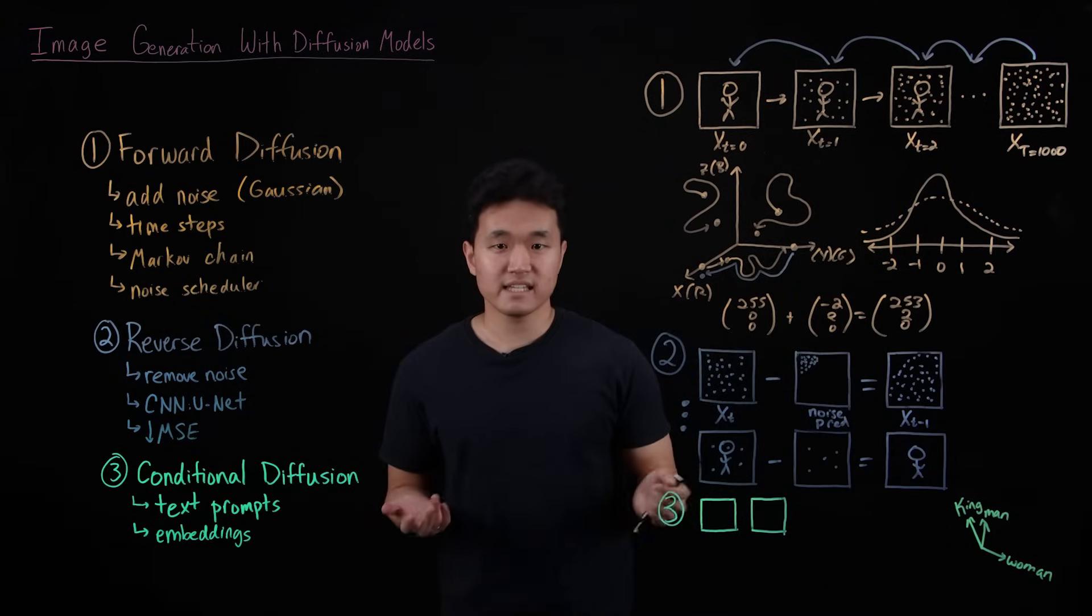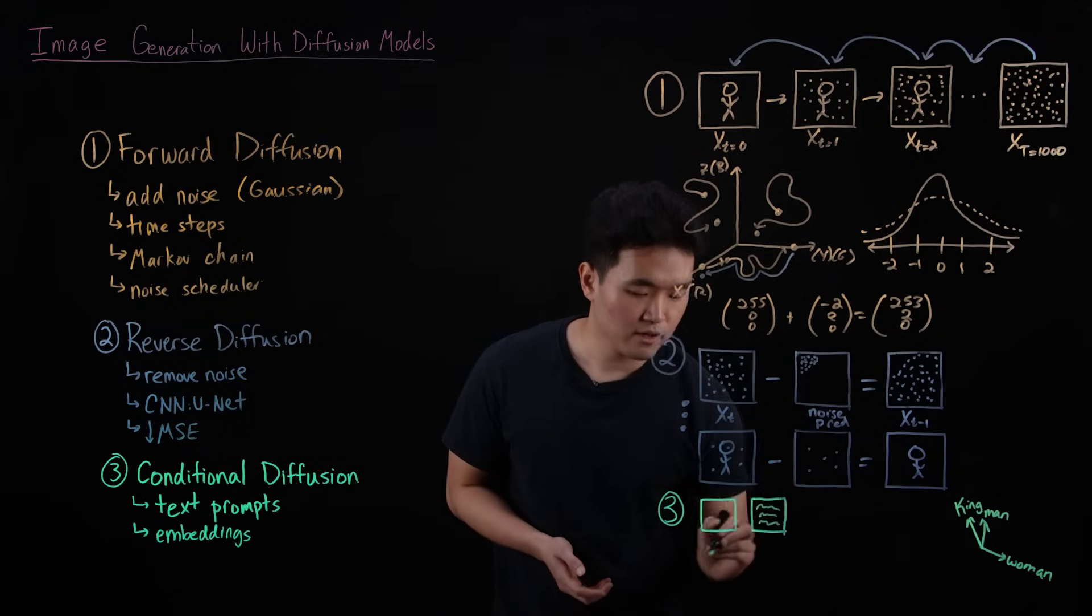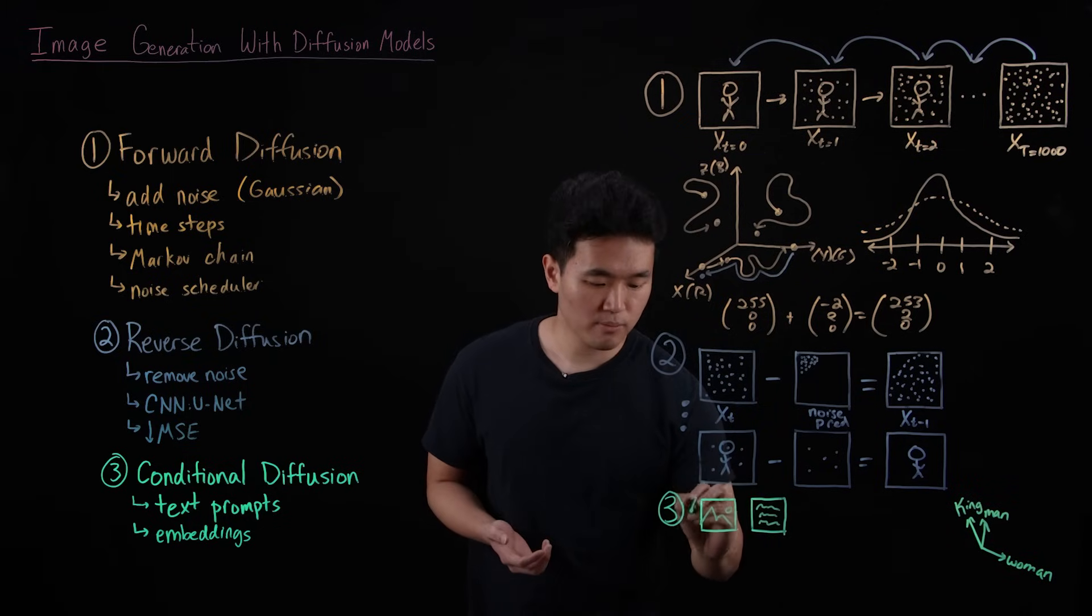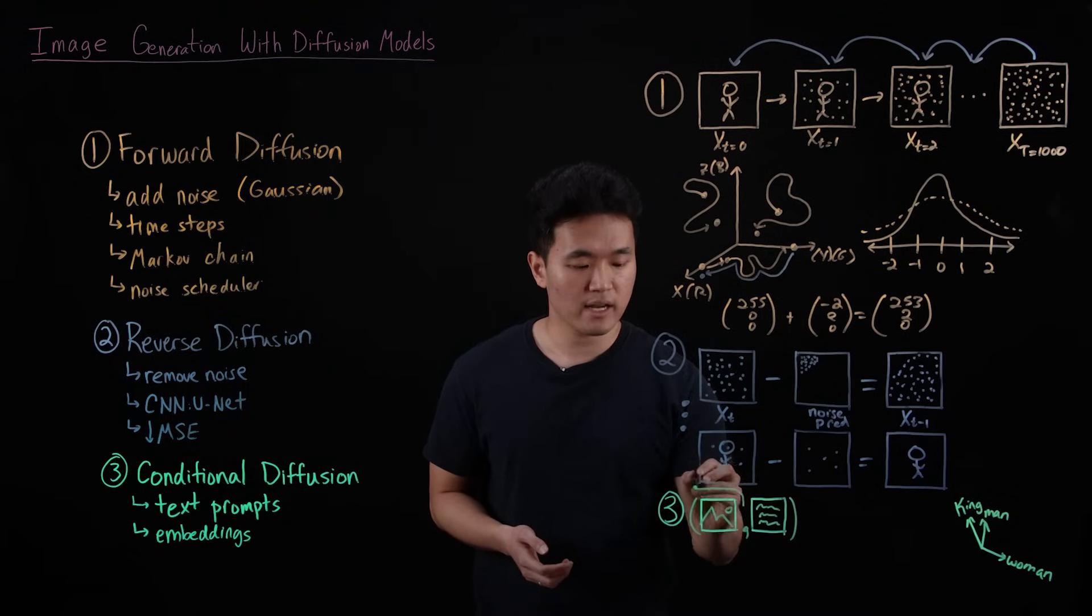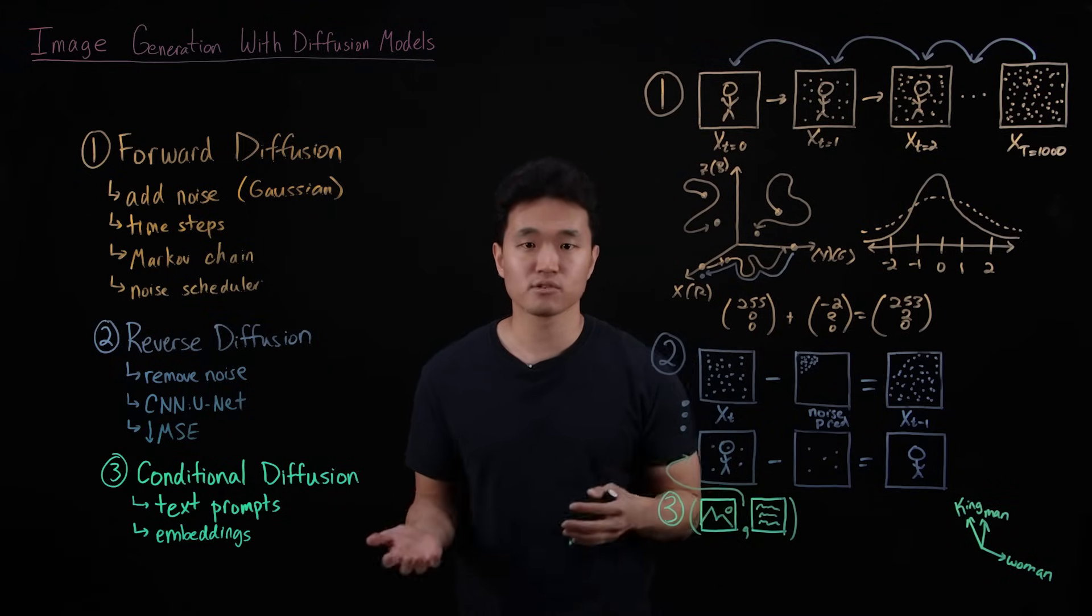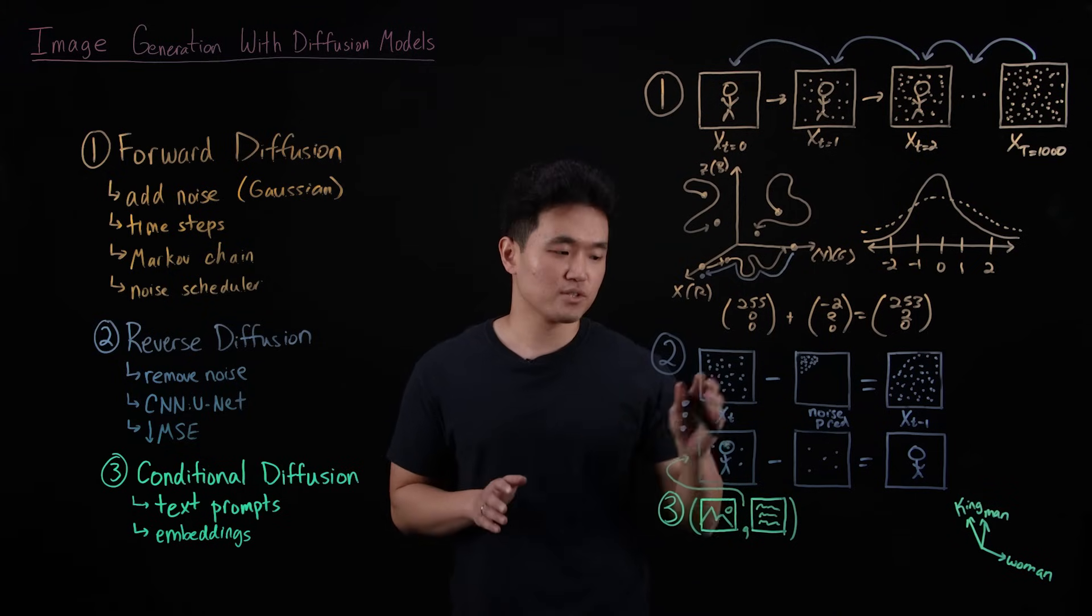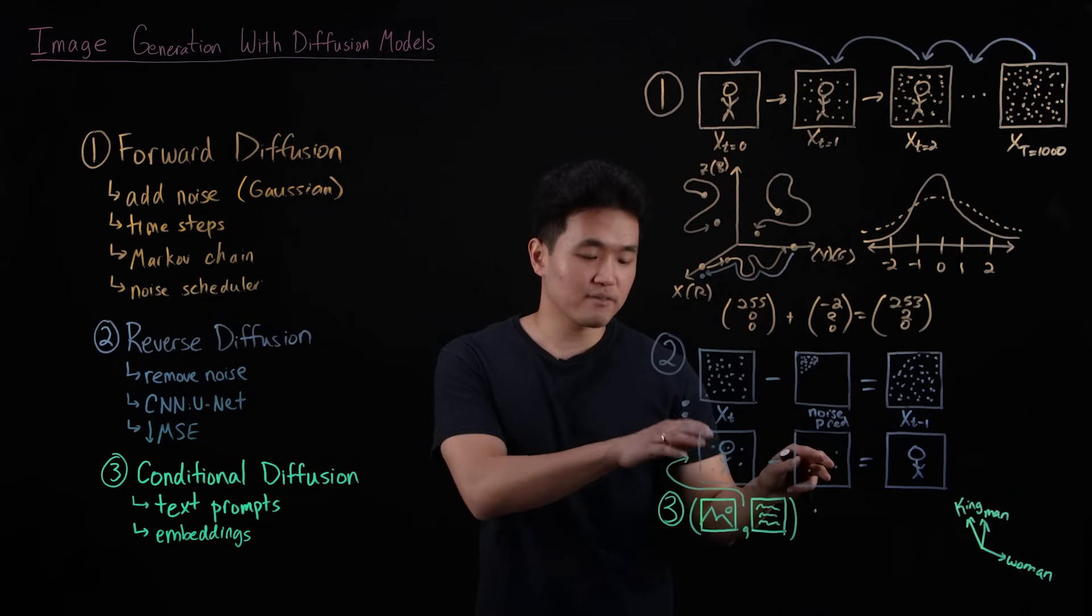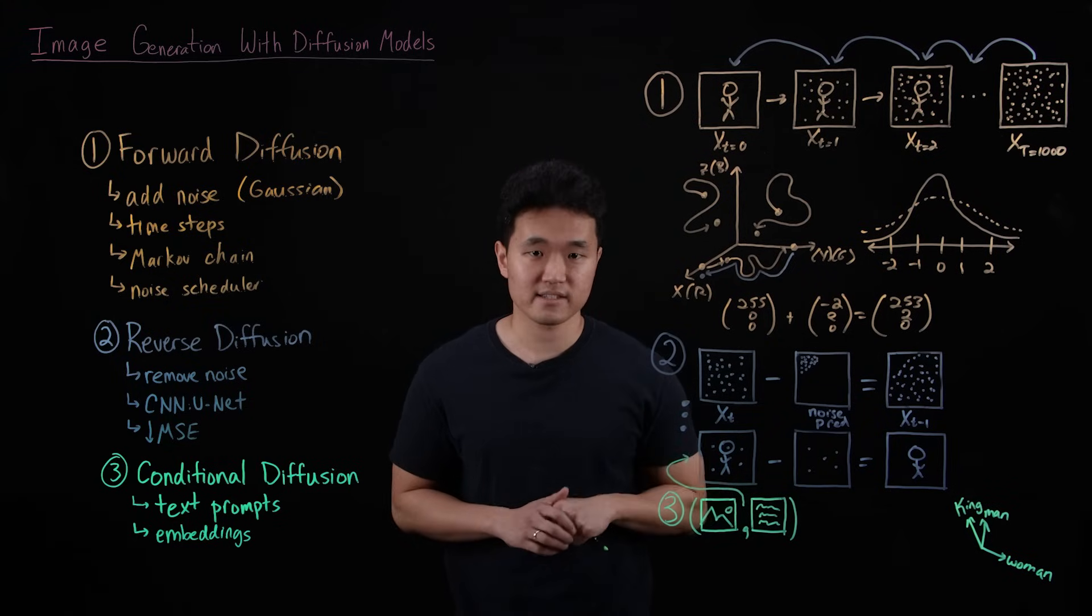So during training, these embeddings of these text descriptions are paired with their respective images that they describe in order to form a corpus of image and text pairs that are used to train this model to learn this conditional reverse diffusion process. In other words, learning how much noise to remove in which patterns given the current image and now taking into account the different features of the embedded text.